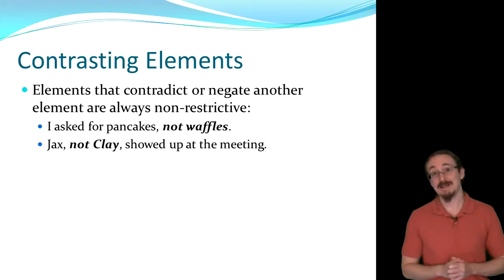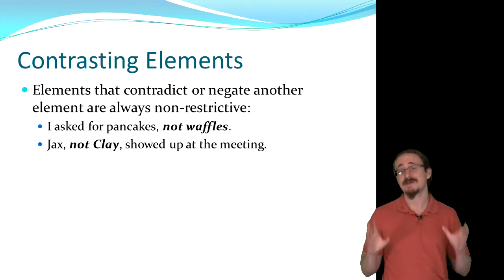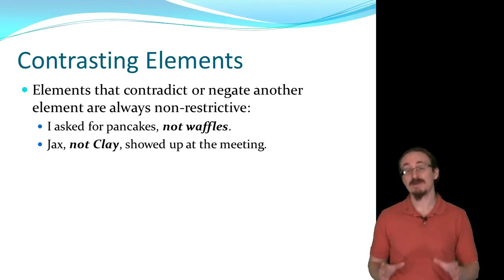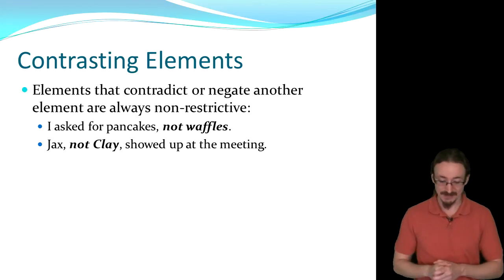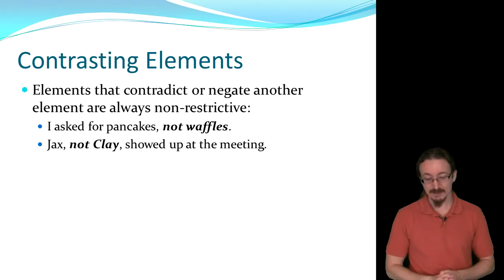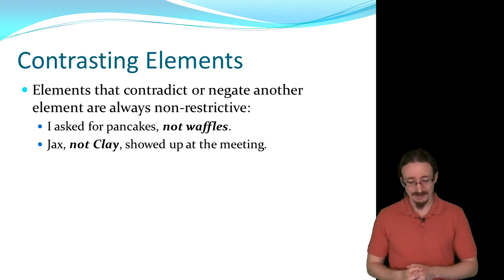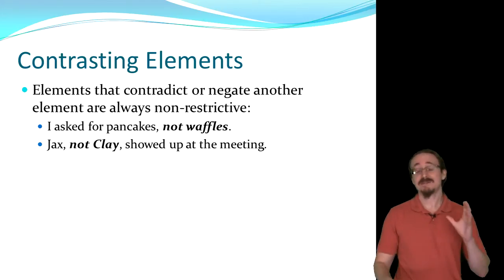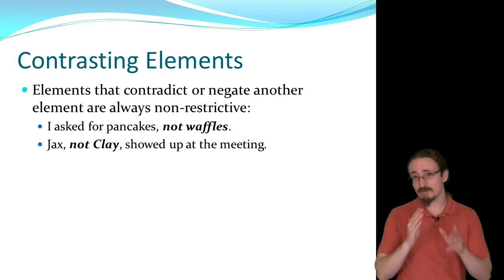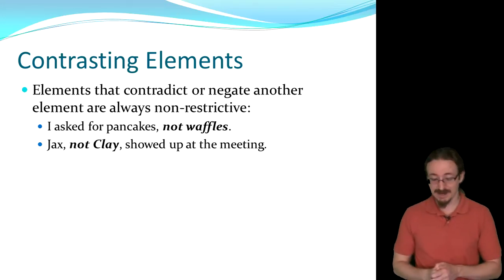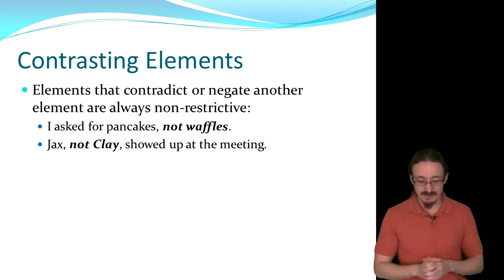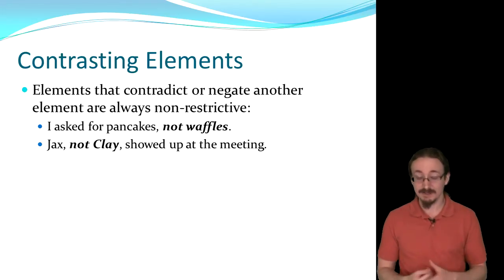Moving on, we have contrasting elements. These are very easy — you just have to be watchful. Basically you've got a small element that negates, contradicts, or goes in a different direction than what you just said. 'I asked for pancakes, not waffles.' 'Jack's, not Clay's, showed up at the meeting.' If you read it out loud, you'll hear those pauses. If you've got not or but in there — something that negates what you just said — put commas around it. That's called a contrasting element.